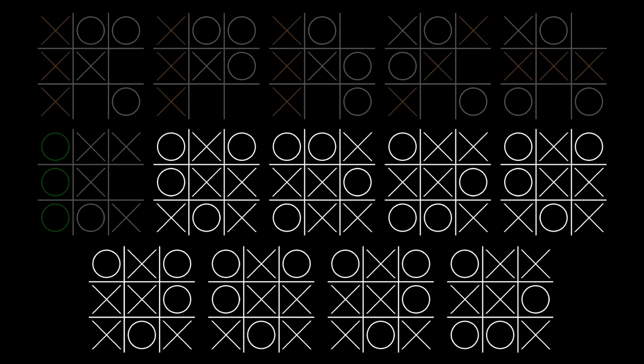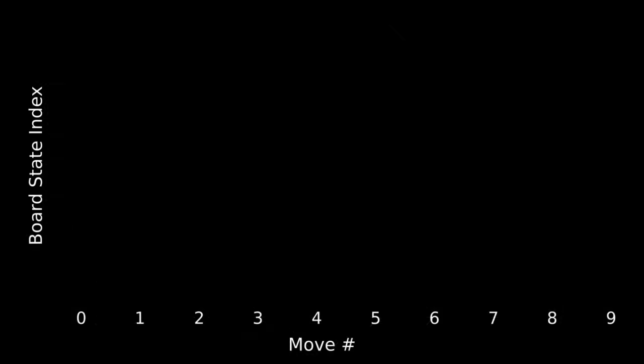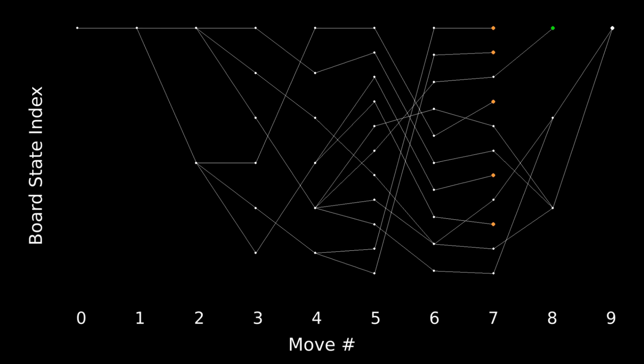Next, some people pointed out in my last video that all of the tie games looked the same. It turns out that our fancy new diagram can clarify this a little. If we load those 14 games, we can see that all the tie games end up at the same board state, even though they took different paths.